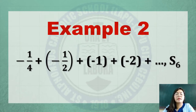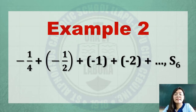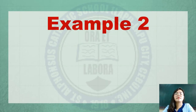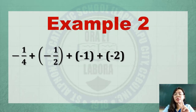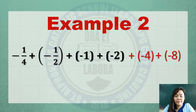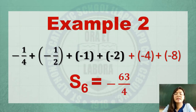Example number 2: negative 1 fourth plus negative 1 half plus negative 1 plus negative 2, plus and so on, S sub 6. First, look for a pattern to identify the other terms until the 6th term. You are already given the 4 terms. Look for the remaining 2 terms: negative 4 and negative 8. Then express these terms as a sum. S sub 6 equals negative 63 over 4.